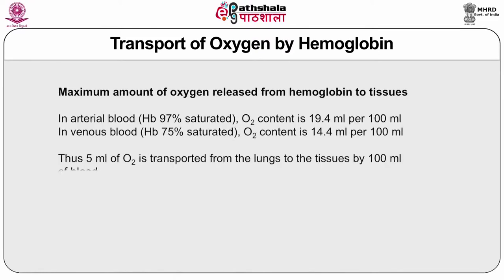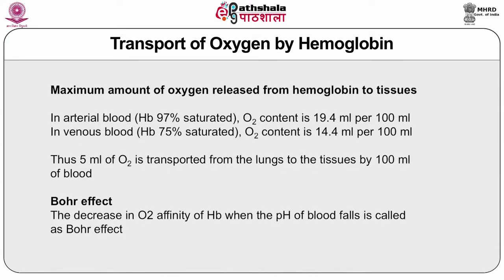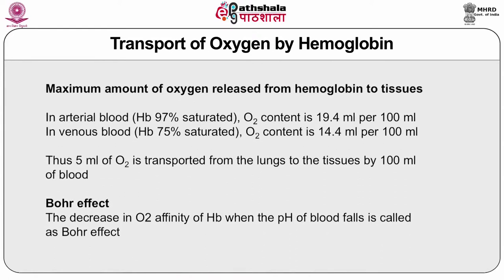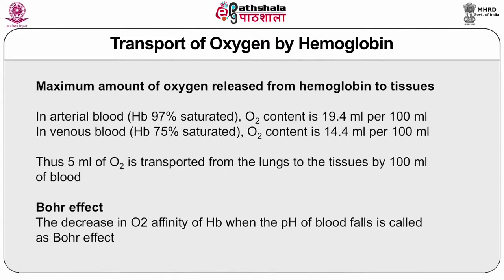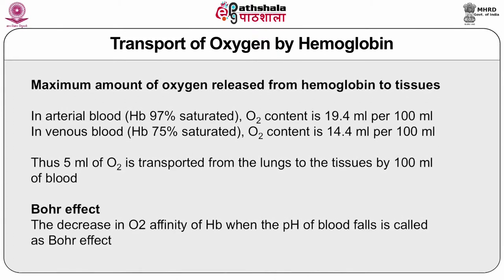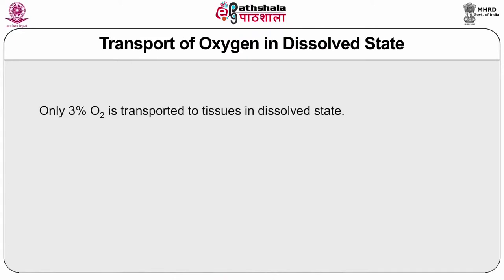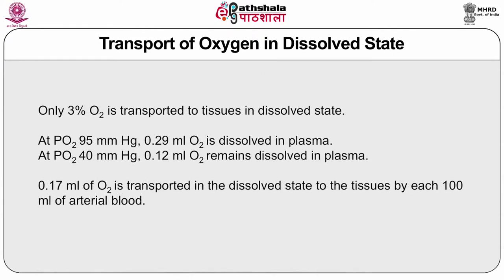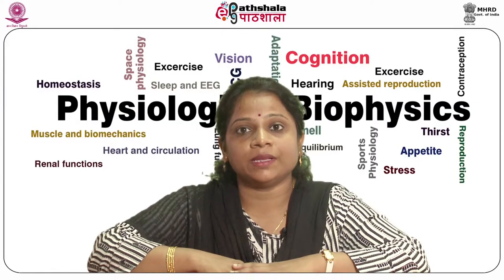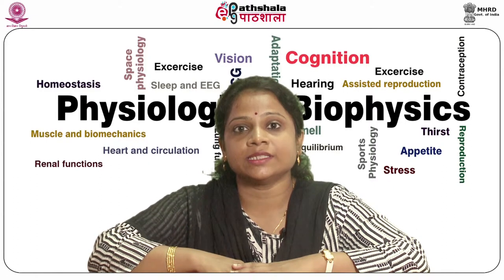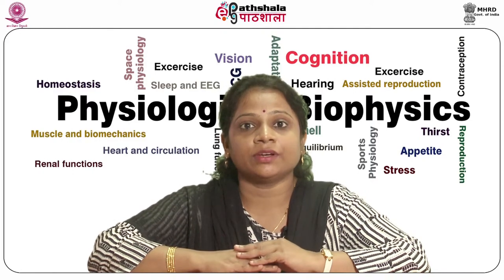In arterial blood where hemoglobin is 97% saturated, oxygen content is 19.4 ml per 100 ml. In venous blood where hemoglobin is 75% saturated, oxygen content is 14.4 ml per 100 ml. Thus 5 ml of oxygen is transported from lungs to tissues by 100 ml of blood. The Bohr effect is the decrease in oxygen affinity of hemoglobin when the pH of blood falls. Only 3% of oxygen is transported to tissues in dissolved state; at PO2 of 95 mmHg, 0.29 ml is dissolved in plasma, and at PO2 of 40 mmHg, only 0.12 ml remains dissolved, so 0.17 ml of O2 is transported dissolved per 100 ml of arterial blood.